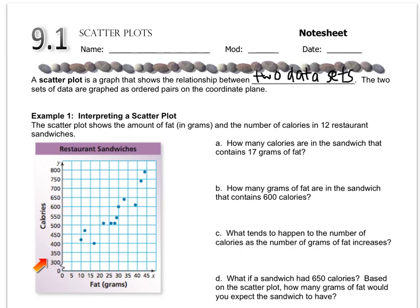So let's just talk about the graph. How many calories are in the sandwich that contains 17 grams of fat? So you go to 17, you find that and you say that it's 400 calories.